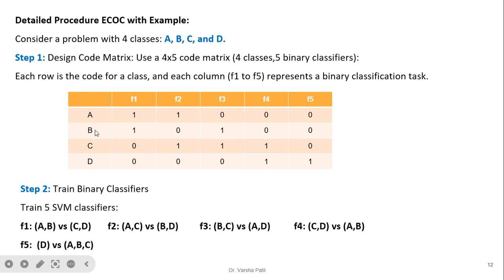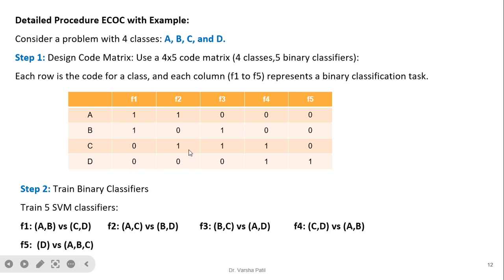Reading the code matrix row by row: class A has features f1 and f2 present; class B has f1 and f3; class C has f2, f3, and f4; class D has f5. Training classifiers column by column: classifier 1 has A, B as positive class and C, D as negative (coded 0); classifier 2 has A, C versus B, D; classifier 3 has B, C versus A, D; classifier 4 has C, D versus A, B; classifier 5 has D versus A, B, C.